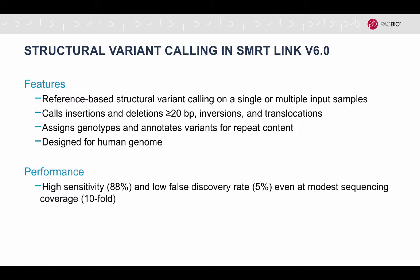The structural variant calling application in SmartLink version 6.0 performs reference-based calling of insertion and deletion variants at least 20 bases long, inversions and translocations from whole genome sequence data for a single or multiple input samples. It assigns genotypes and annotates variants for repeat content, and it's designed primarily for human sequencing data.